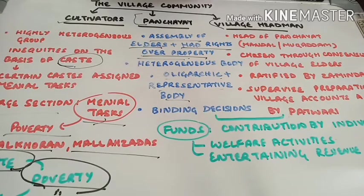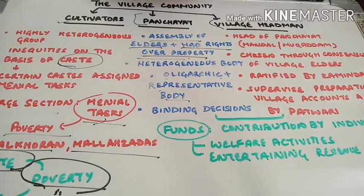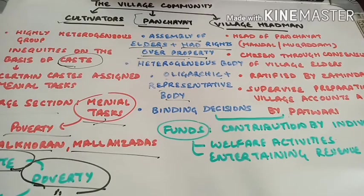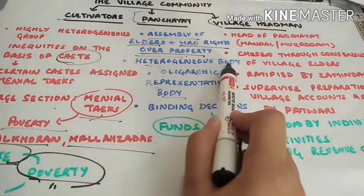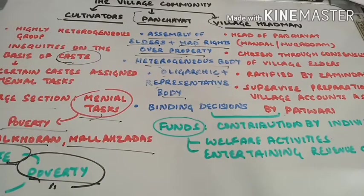Oligarchy is basically a form of government wherein a few people rule — they are less in number and they are a privileged group. Usually they exercise despotic power, because they have a lot of resources at their disposal, are economically well off, and even politically powerful, so they kind of become tyrannical or despotic. The Panchayat was representative because the village comprised of people from different castes, and so the Panchayat itself was a heterogeneous body and claimed to be of a representative character.